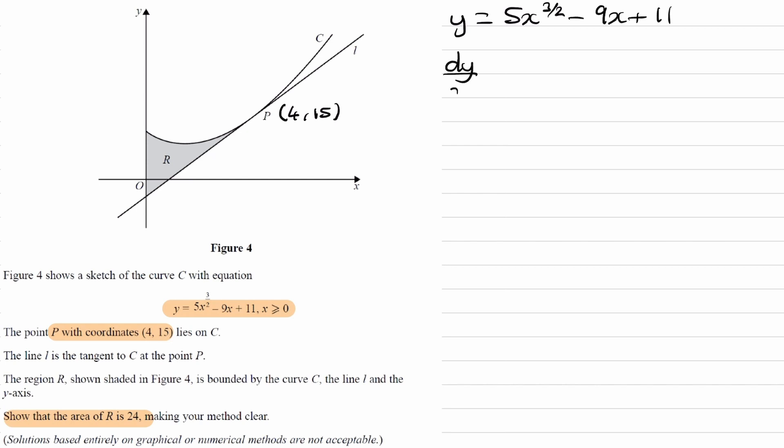Differentiate this, and we end up with 15 over 2x to the half minus 9. We want to work out the gradient of the curve at point P to work out the gradient of the tangent.